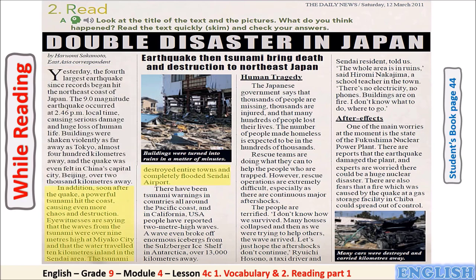'In addition, soon after the quake, a powerful tsunami hit the coast, causing even more chaos and destruction. Eyewitnesses say that the waves from the tsunami were over nine meters high at Miyako City, and that the water traveled 10 kilometers inland in the Sendai area. The tsunami destroyed entire towns and completely flooded Sendai airport. There have been tsunami warnings in countries all around the Pacific coast, and in California, USA, people have reported two-meter high waves. A wave even broke off enormous icebergs from the Sulzberger ice shelf in Antarctica, over 13,000 kilometers away.'